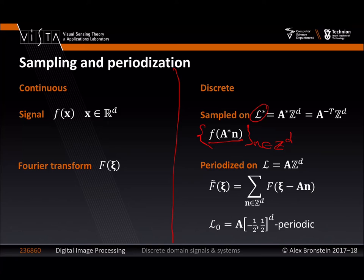What happened to the Fourier domain? Instead of having the Fourier transform, we had it periodized on the dual lattice L, because we sampled on L-star, so the dual to L-star is L. It means that it is periodic on L-zero. All the information needed to describe this periodized Fourier transform of the sampled signal is contained in one of its replicas. By convention, this canonical replica is supported on L-zero. So if I tell you the content of the periodized Fourier transform on L-zero, you can replicate those values to the entire domain and obtain F-tiled.